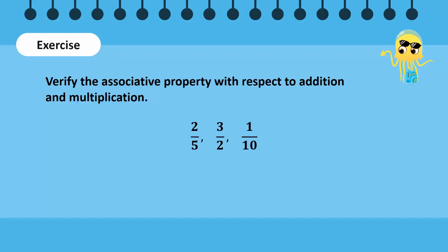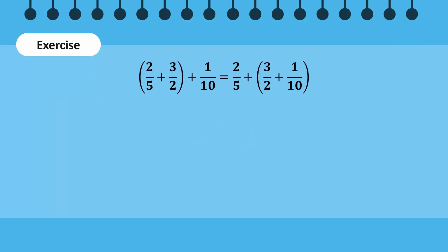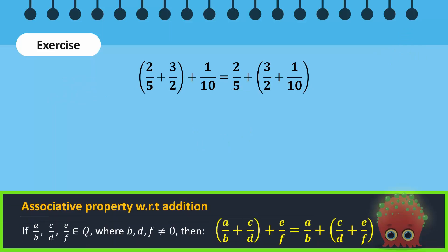Now let us do a quick exercise. Verify the associative property with respect to addition and multiplication for the given rational numbers. Let us solve the problem together. First, we will form an equation as follows. The brackets show the order in which the rational numbers will be added.